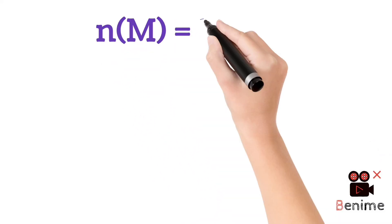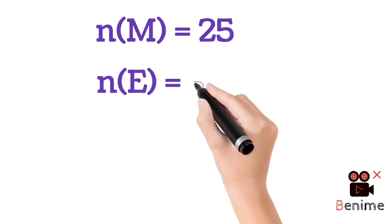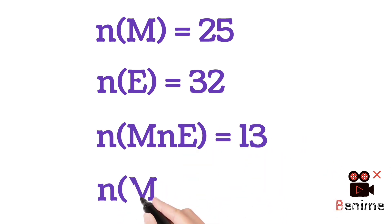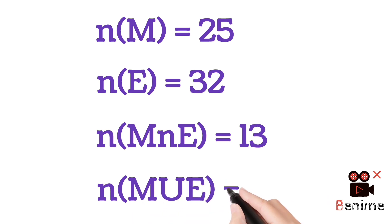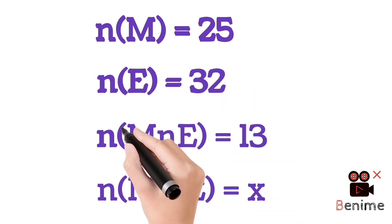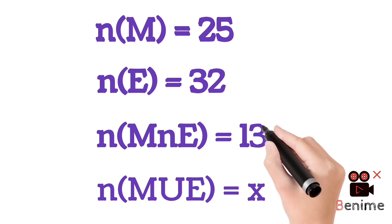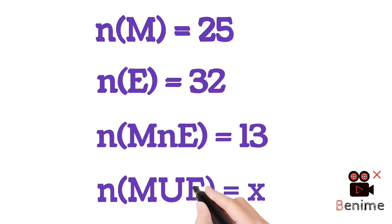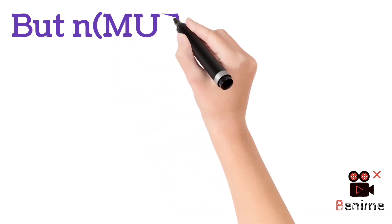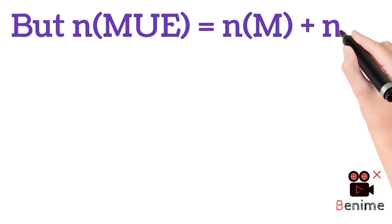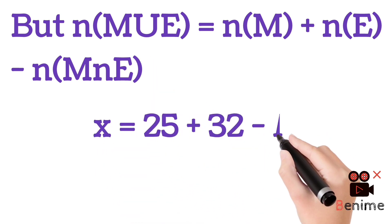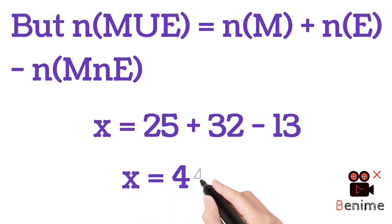We shall solve this by using the letters M and E to represent Mathematics and English respectively. From the question, we can see that N of M is equal to 25, N of E is equal to 32, N of M intersect E — that is the number of candidates that offered both courses — is equal to 13. N of M union E is unknown, so we shall represent it with letter X. But we know that N of M union E is equal to N of M plus N of E minus N of M intersect E. So if we substitute the values, we will have X is equal to 25 plus 32 minus 13, and that gives 44.